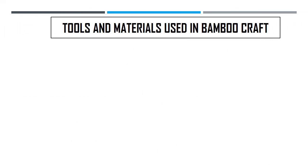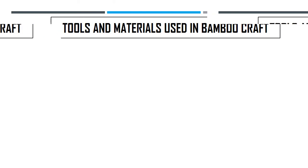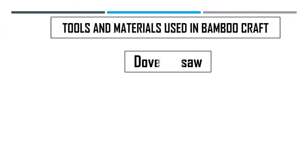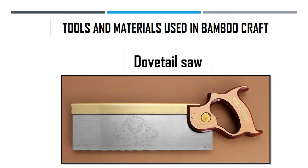The third tool is the coping saw, used for cutting exterior and interior curves on bamboo strips. This type of saw is used for making designs on your bamboo craft. Another tool is the dovetail saw, which has a straight handle like a chisel and is used to cut thin strips of bamboo and make small wood joints.